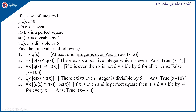Next, ∃x[q(x) ∧ t(x)]: q(x) is x is even and t(x) is x is divisible by 5. Using the same counter-example, for x = 10, both q(x) and t(x) are true. Therefore ∃x[q(x) ∧ t(x)] is true.